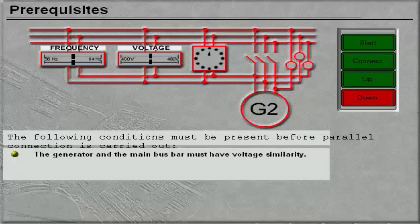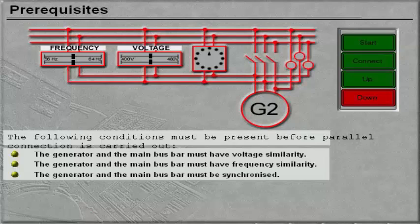The generator and the main bus bar must have voltage similarity. The generator and the main bus bar must have frequency similarity. The generator and the main bus bar must be synchronized.